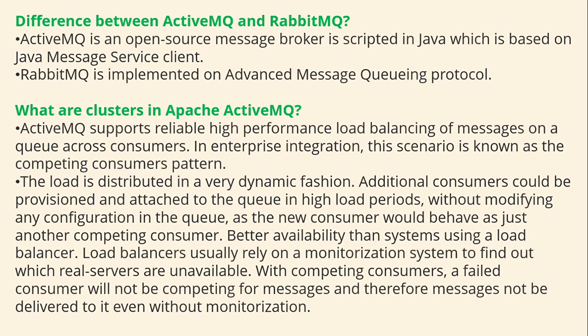Difference between ActiveMQ and RabbitMQ: ActiveMQ is an open source message broker written in Java, whereas RabbitMQ is implemented on the Advanced Message Queuing Protocol (AMQP).